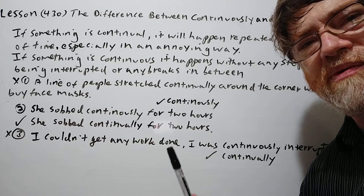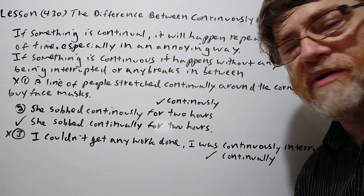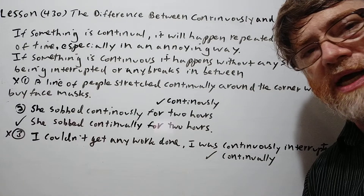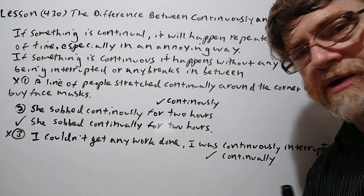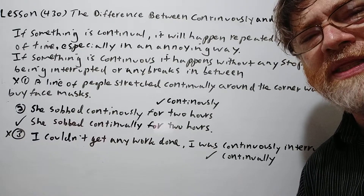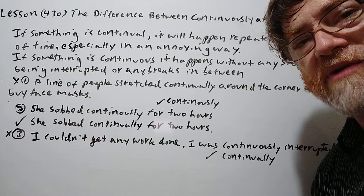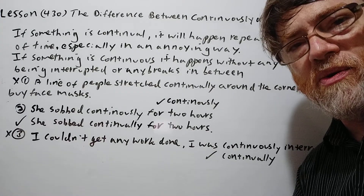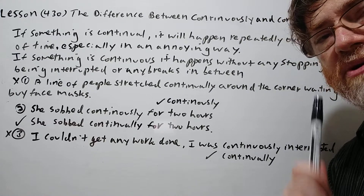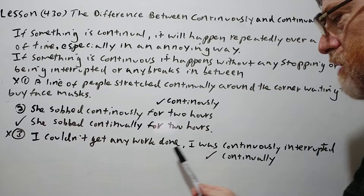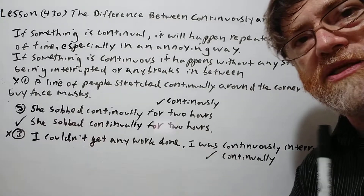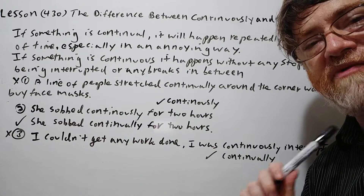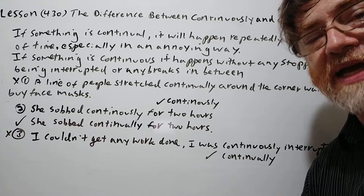You want to emphasize how annoying or disturbing it was that she cried for that long. For the third example: "I couldn't get any work done. I was continuously interrupted." Probably continually is a little better here. When you say continuously, that sounds like there were really no breaks in between. There probably were some breaks — maybe 10 or 15 minutes where you were doing work without someone disturbing you. Continually means it happened often enough that it was really annoying and frustrating. You should say "I was continually interrupted." Continuously sounds like nearly every minute or every second, and it probably wasn't that.